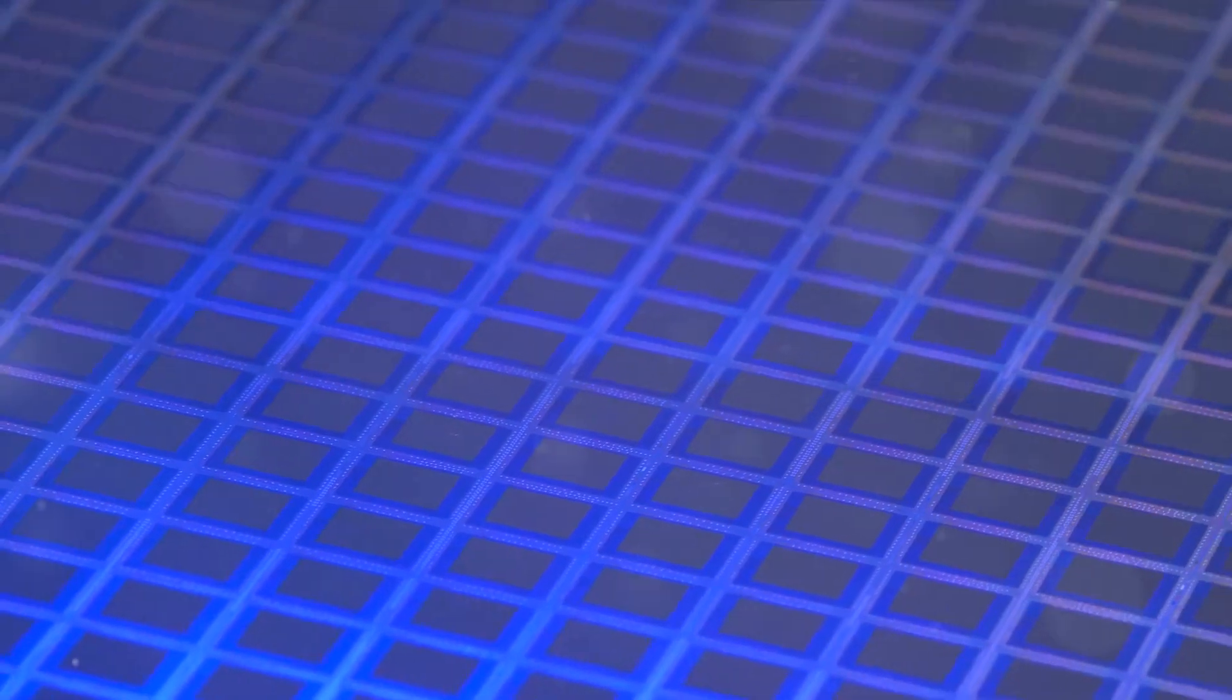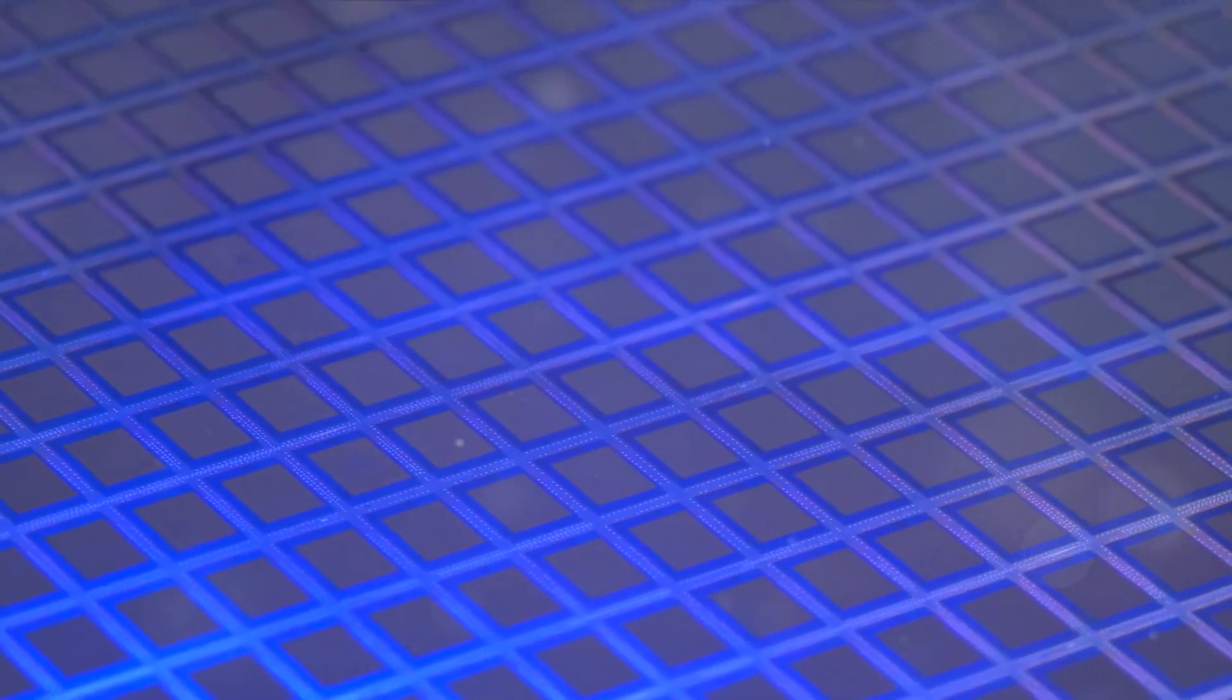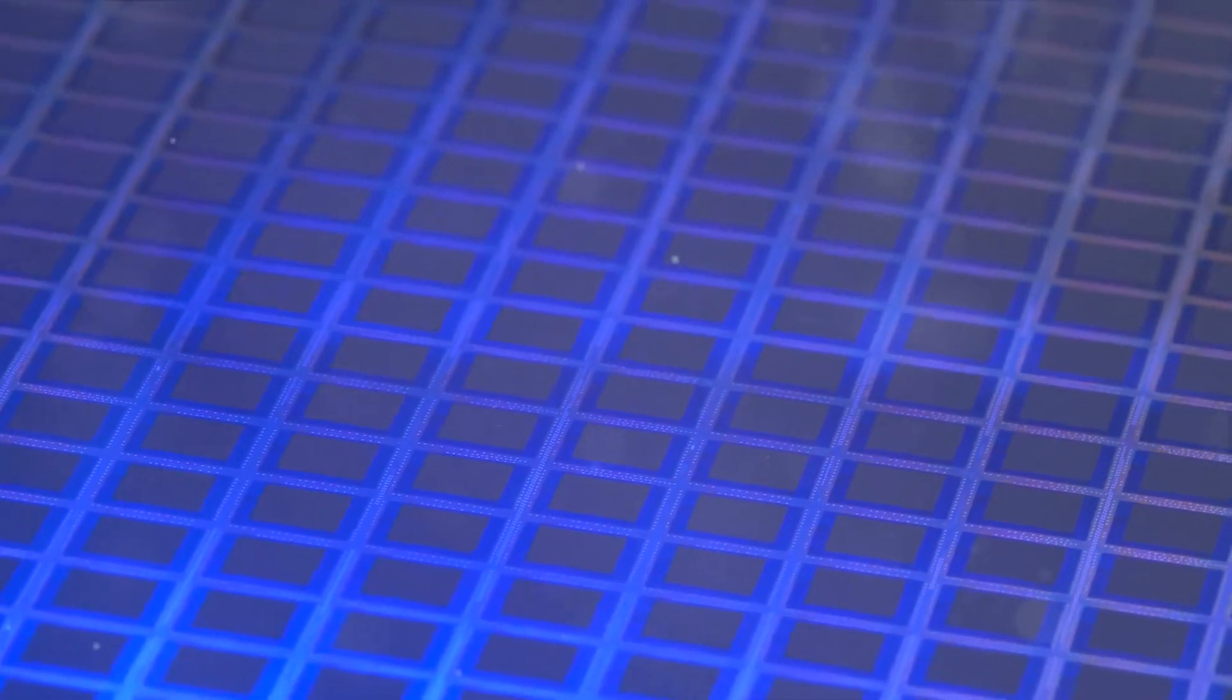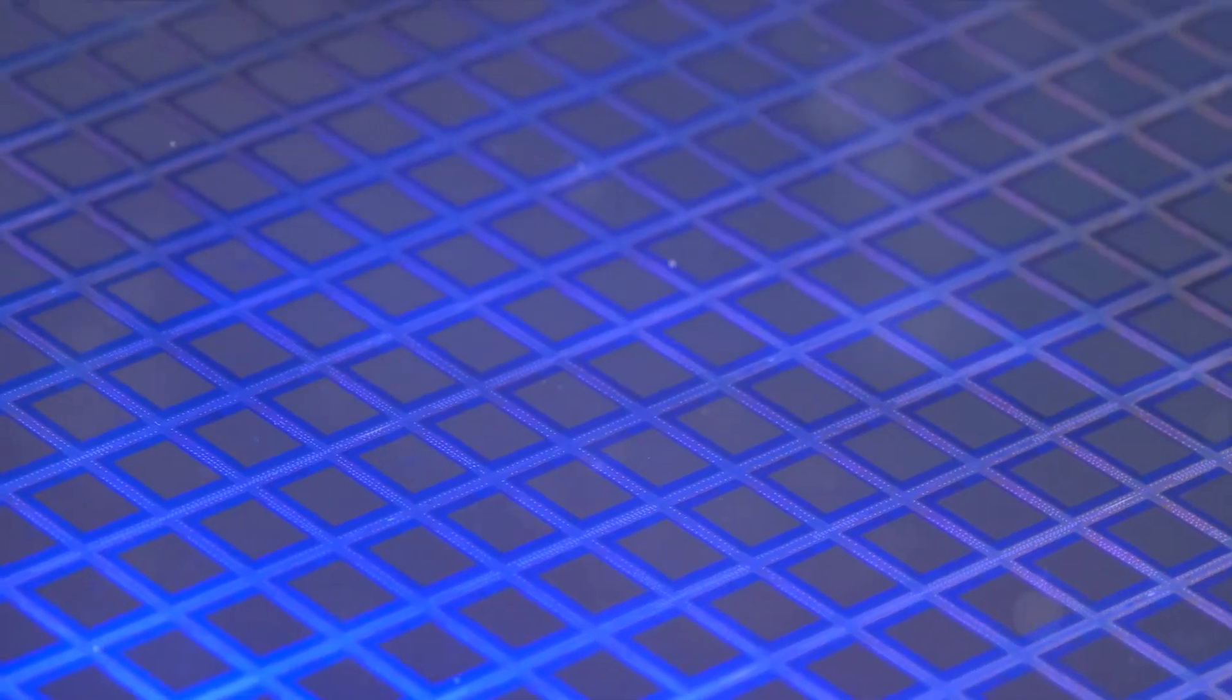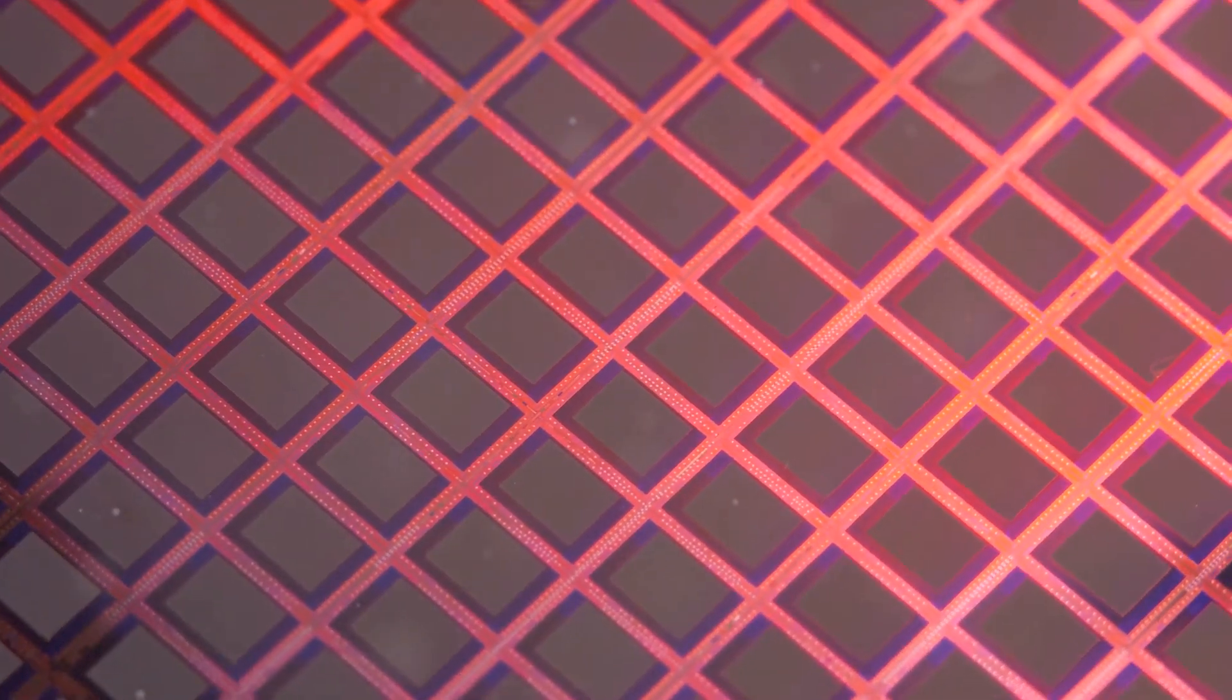This junction is the heart of our solar cell, the place where the magic happens. It establishes an electric field, which is critical for converting sunlight into electricity. Now, you might be thinking, why add impurities? Isn't purity usually a good thing? Well, in the world of semiconductors, it's these impurities that give the material its unique ability to control the flow of electricity.